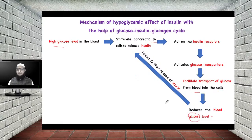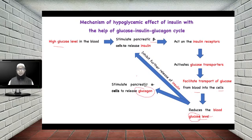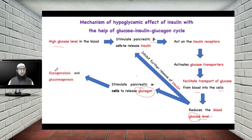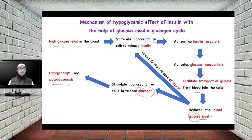The second important thing that happens after blood glucose level becomes low is it stimulates pancreatic alpha cells to release glucagon. When there is low blood glucose level, it stimulates pancreatic alpha cells to release glucagon. This glucagon basically produces glycogenolysis — where glycogen is converted into glucose — and it also stimulates gluconeogenesis, which is the generation of new glucose. Overall, glycogenolysis and gluconeogenesis produce an increase in blood glucose level, that is hyperglycemia, and this cycle is continued.